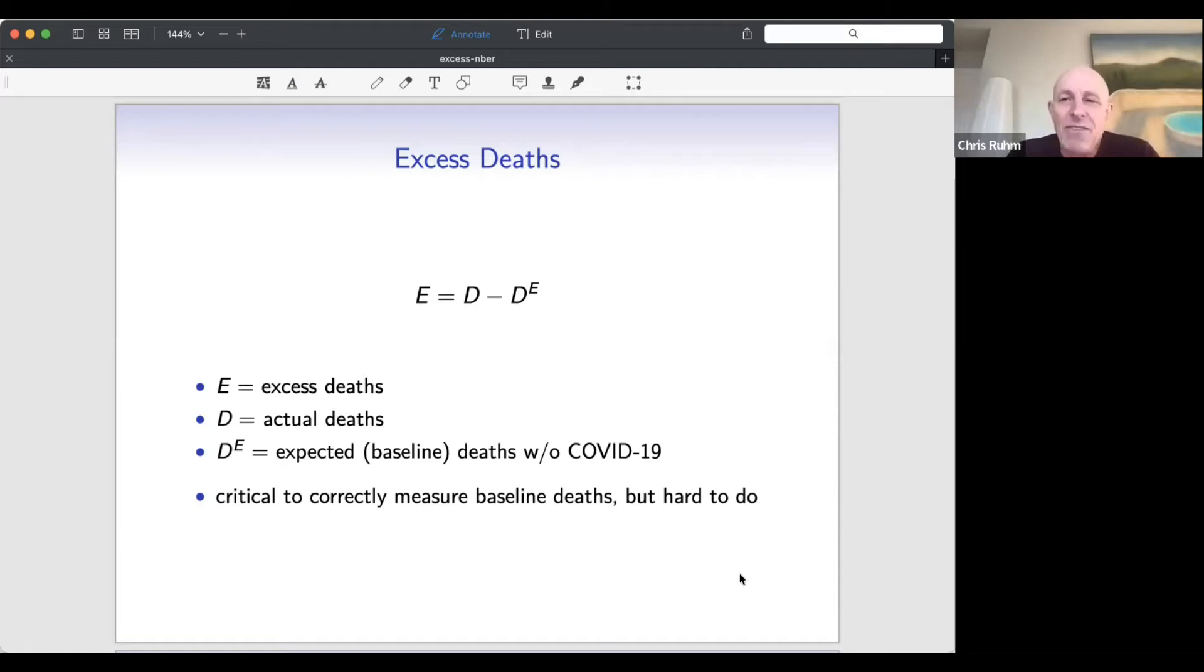The big one is how do we know what the counterfactual is? That is, how do we figure out how many deaths there would have been if we hadn't had the pandemic? And that turns out to be quite a complicated issue. It's one that I spent quite a lot of time on in this project. In fact, initially, this is the first step for some additional work I wanted to do, looking at how we separate pandemic versus recession effects.